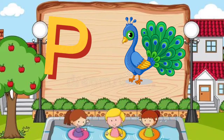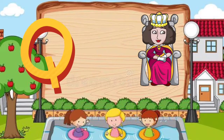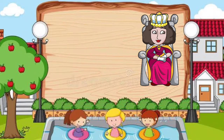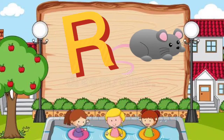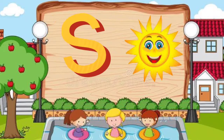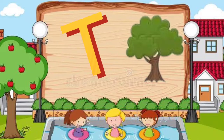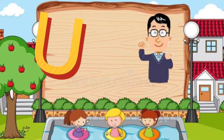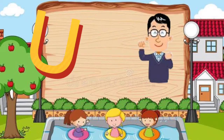P for pick-off, Q for queen, R for rat, S for sun, T for tree, U for uncle.